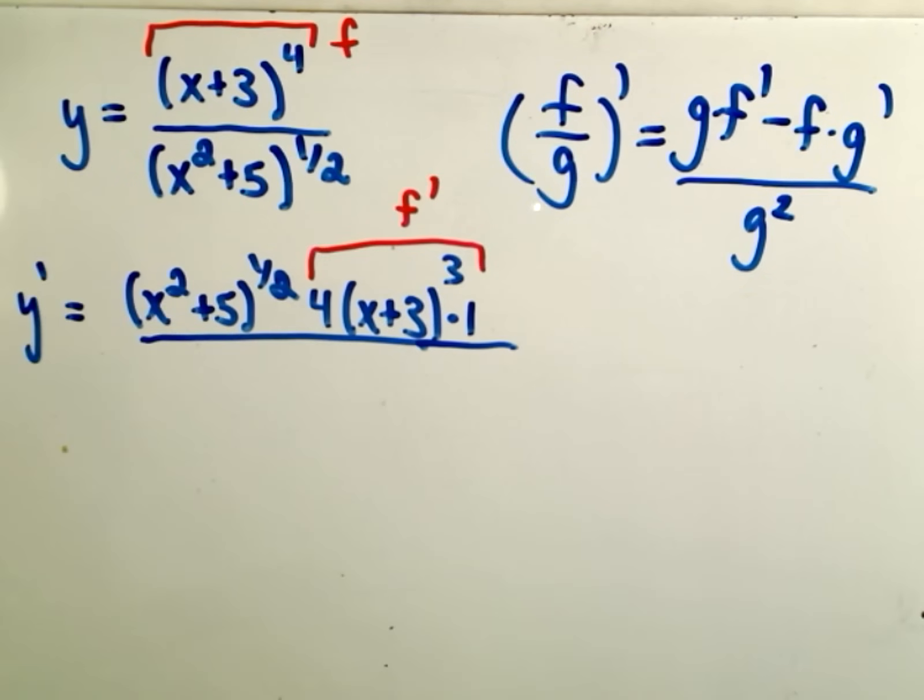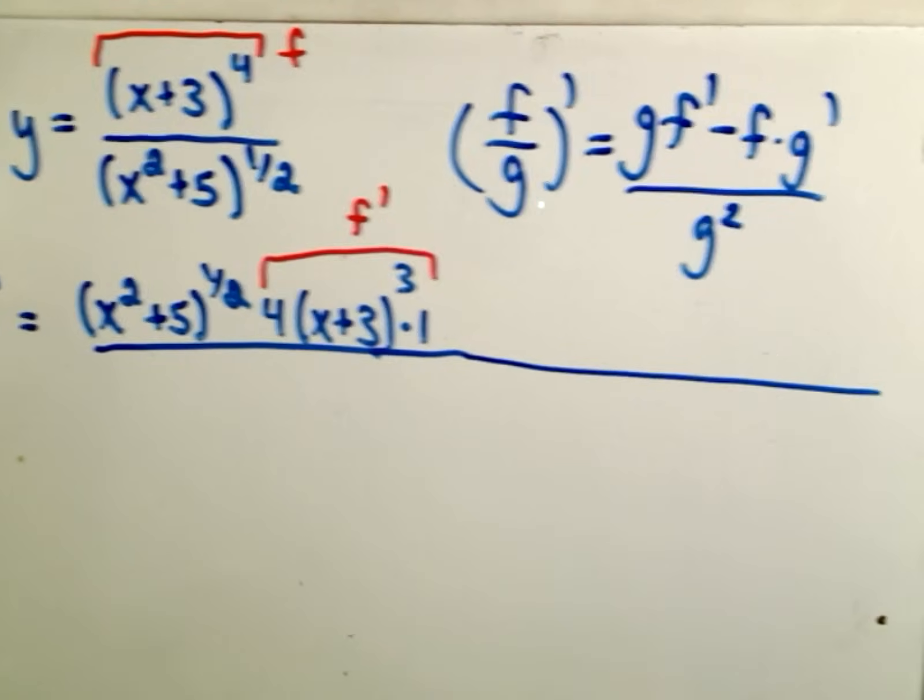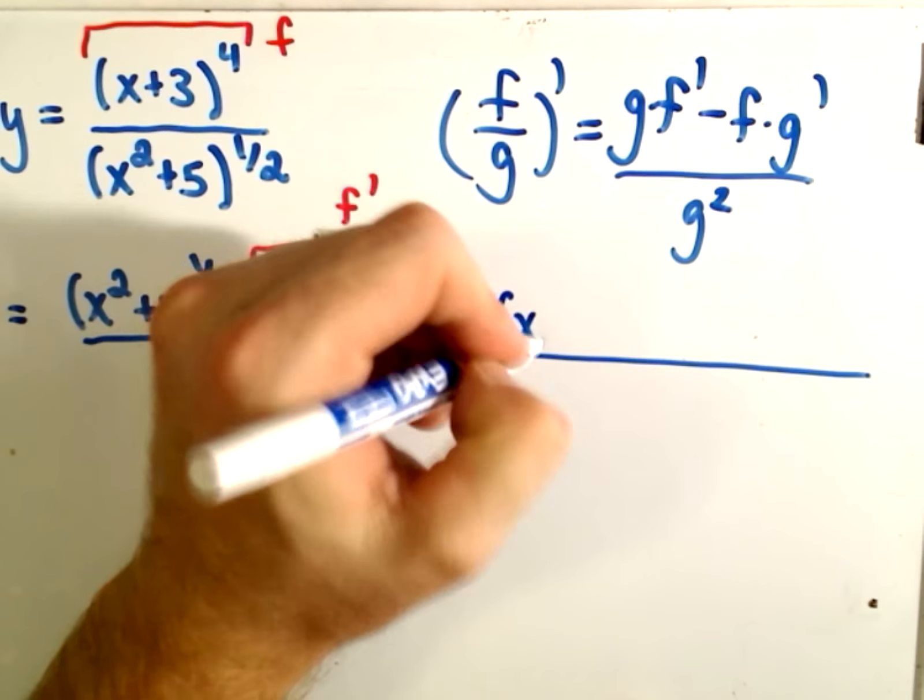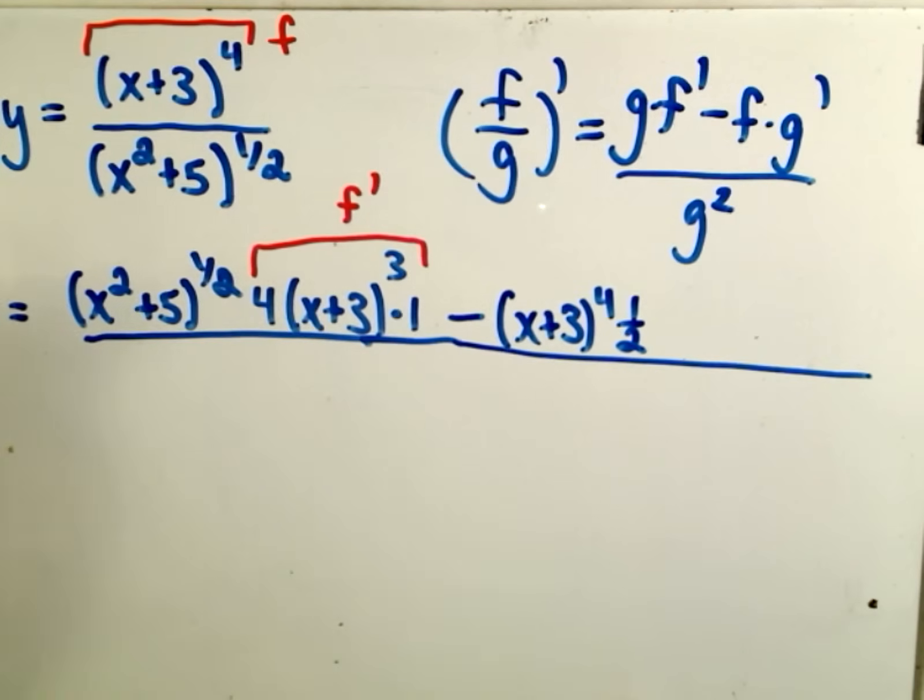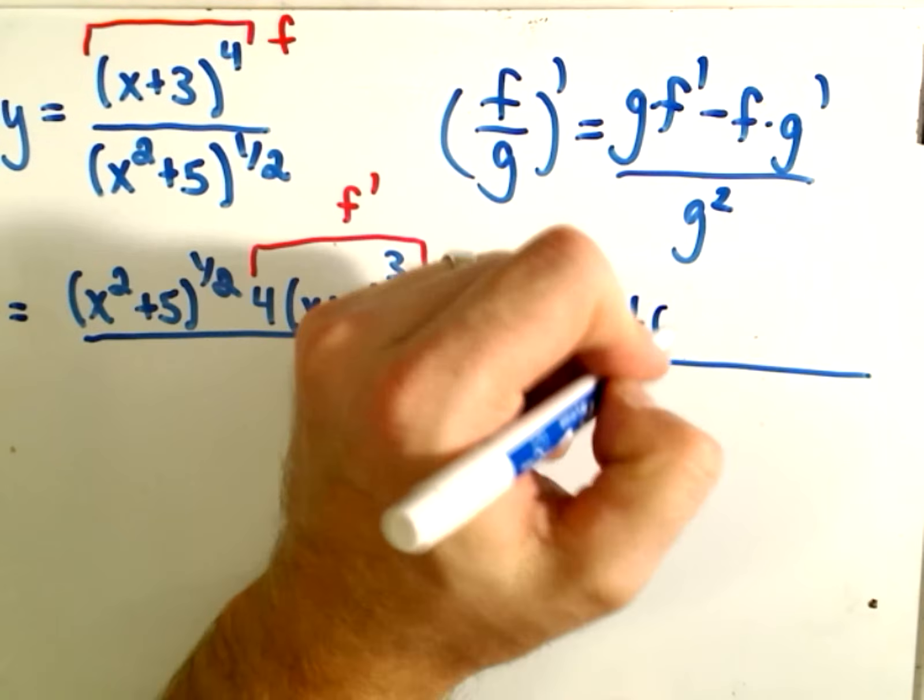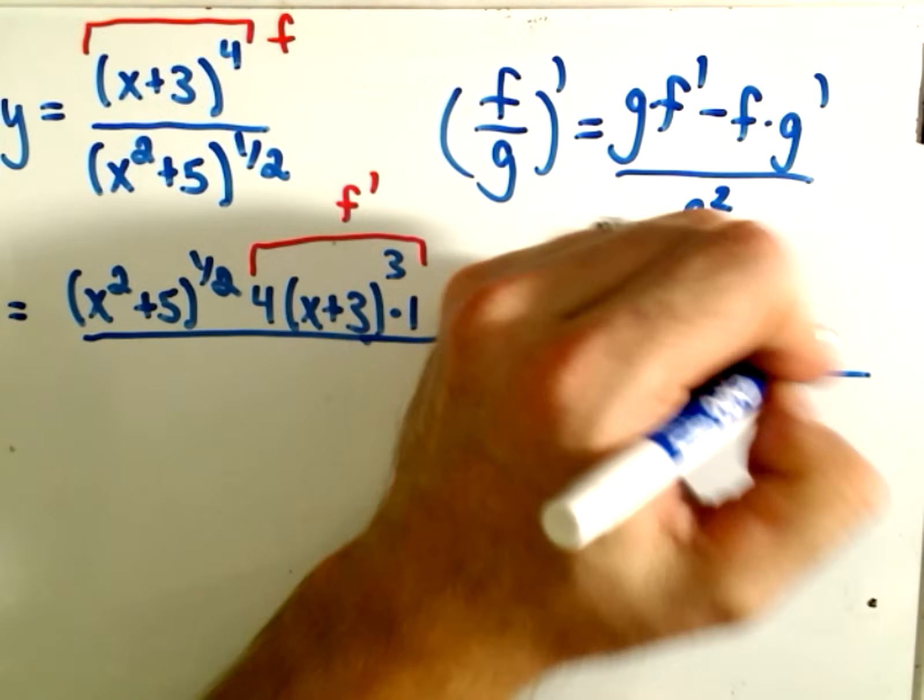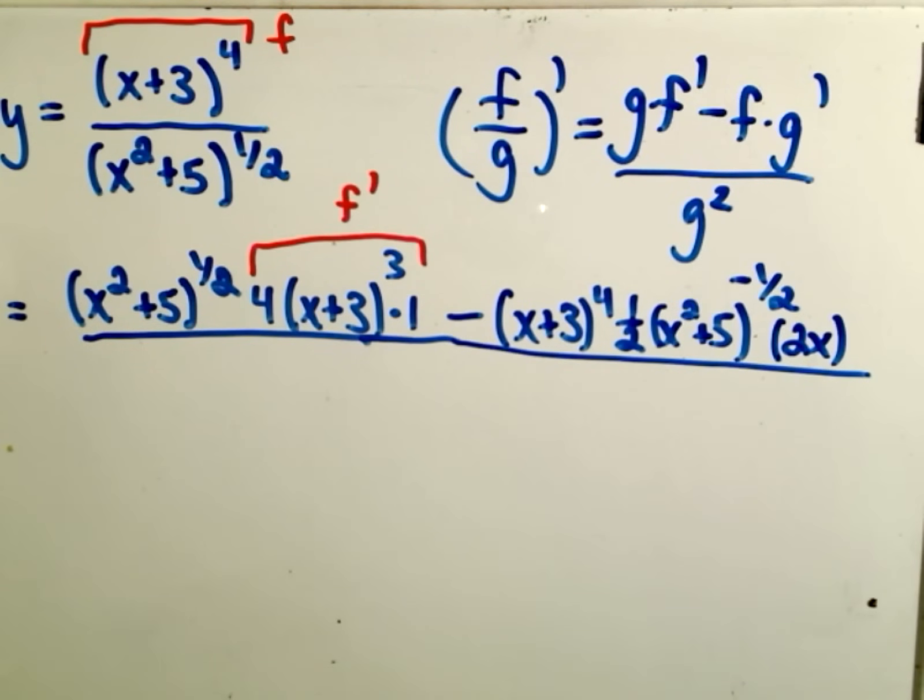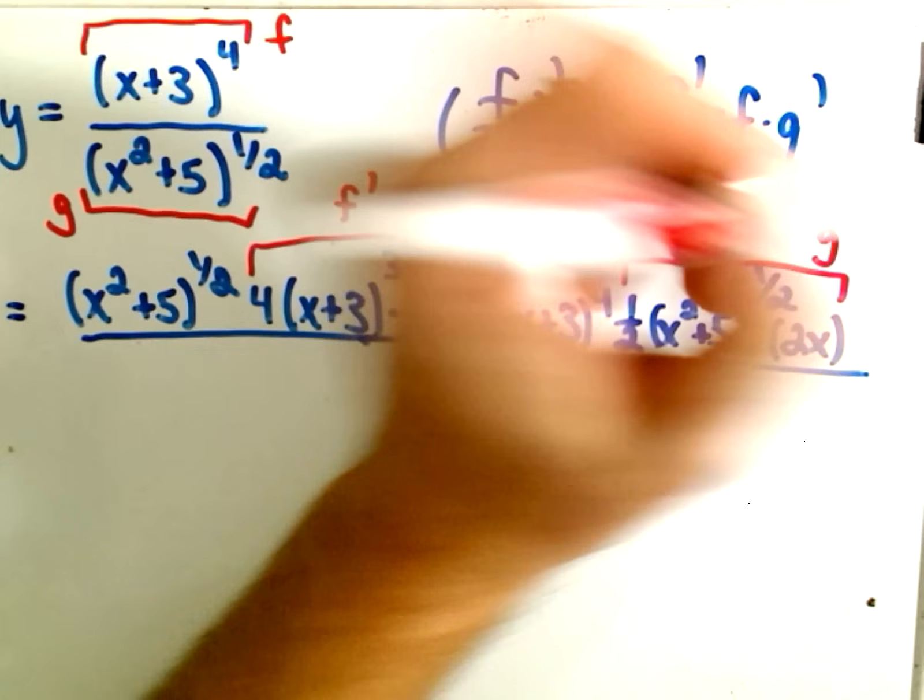And the other one would be g. Then it says we have minus the top thing, which is x plus 3 to the 4th, times the derivative of the bottom. So the 1 half will come out front, we'll get x squared plus 5, take 1 away, that will give us to the negative 1 half, and the derivative of the inside will be 2x. Okay, so I think I was able to cram it all in there. So there is my function g, and there is g prime.